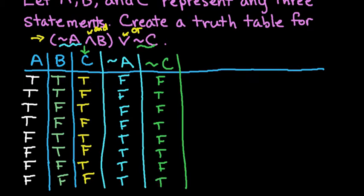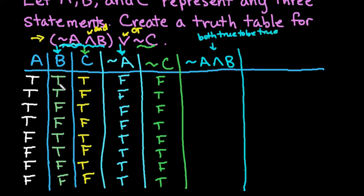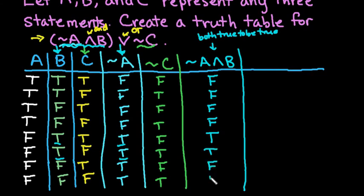Now I'm going to start putting it together, and I always start with groups first. I have the group not A and B, so I'll work on that first because of the parentheses — just like orders of operations. I compare the not A column with the B column; both must be true for 'and' to be true. Not A is false, B is true — false. Not A is false, B is true — false again. False, false — false. Then we finally have true, true — true. The last two are false because at least one of them is false.